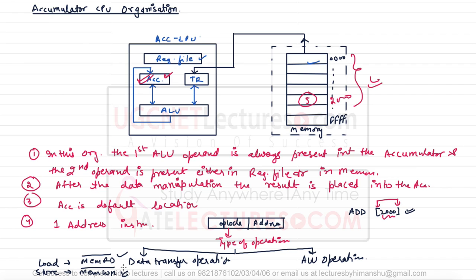In a store operation, the source is the accumulator and the destination is memory. Loading means taking data from memory and putting it into the accumulator; storing means taking data from the accumulator and writing it to memory. For ALU operations, the first operand is always in the accumulator and the second operand is in a register or memory. So source one is the accumulator, source two is a register or memory, and the destination is always the accumulator.